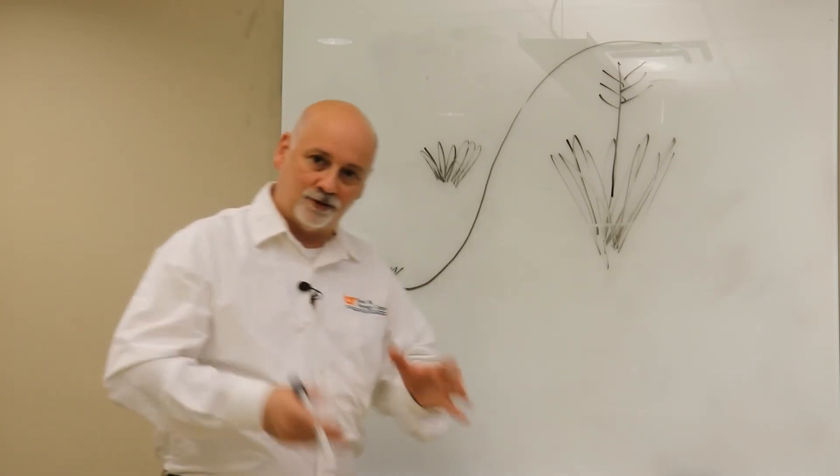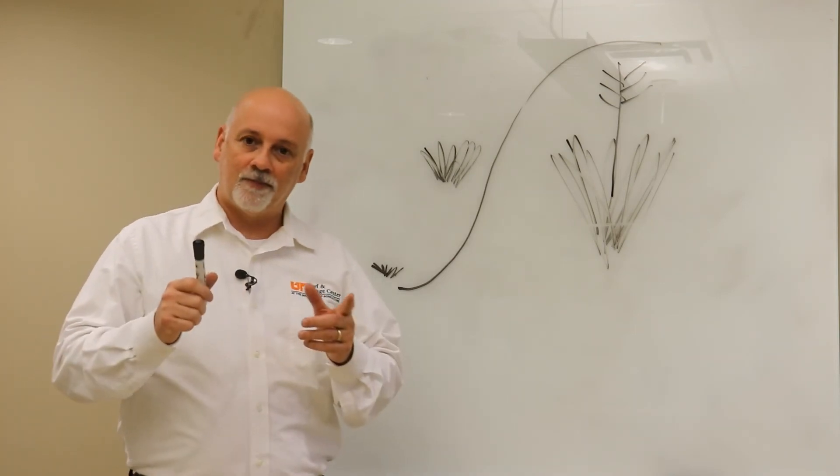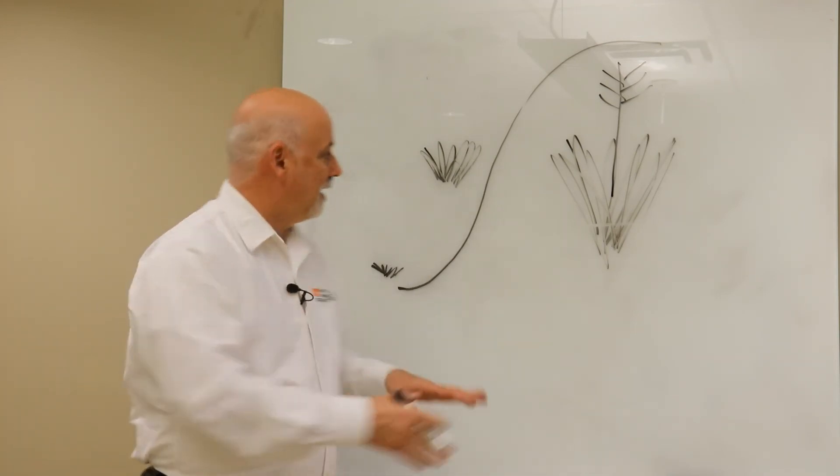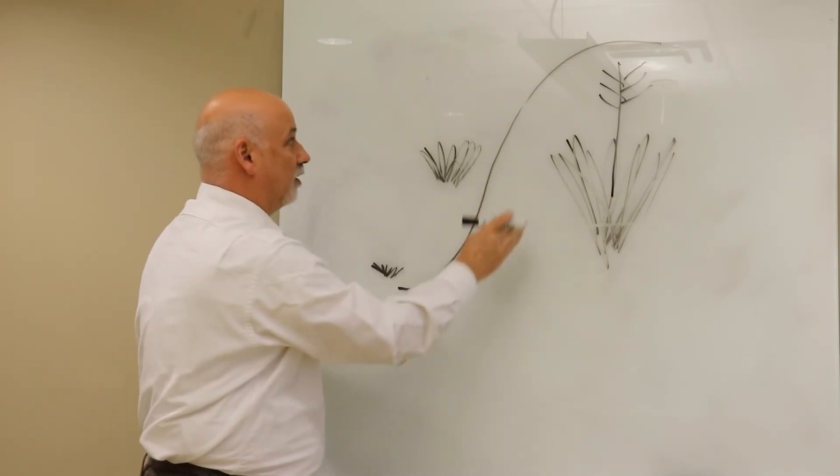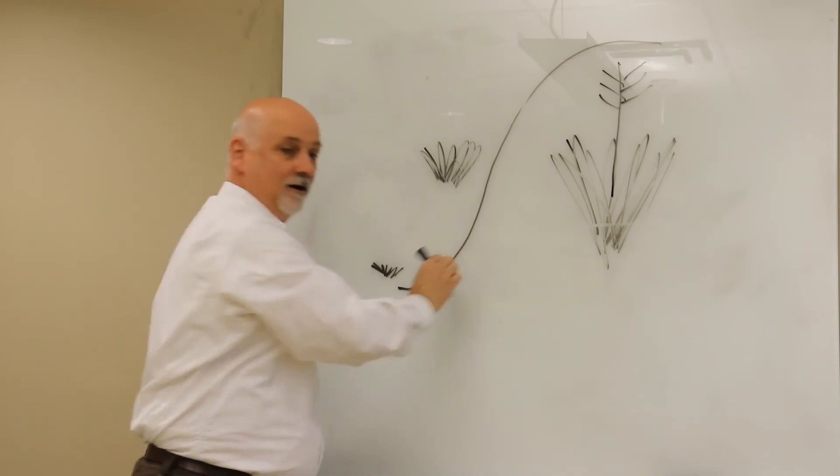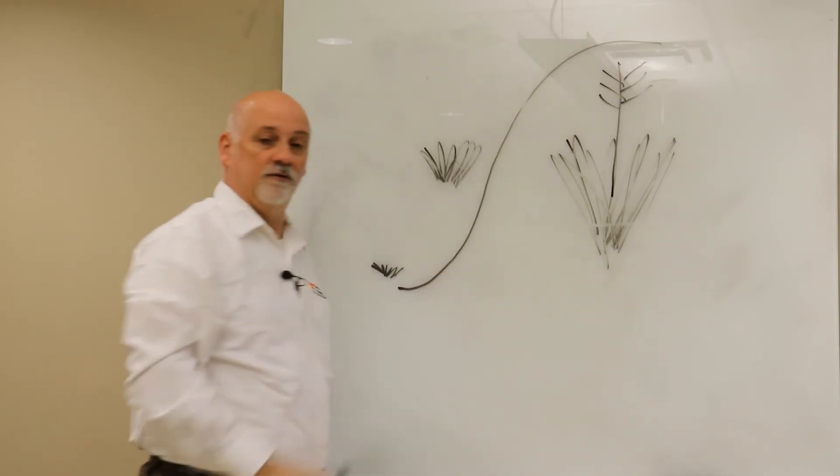If you ever read an article about rotational grazing and it makes it sound like it's an animal management tool where you're moving your animals to different pastures, really rotational grazing is not about animal management, it's about forage management. What you're trying to do is to control this curve and you're trying to go from here to here.